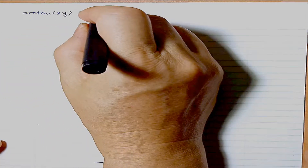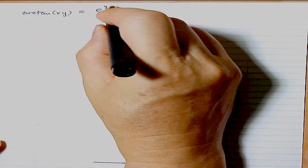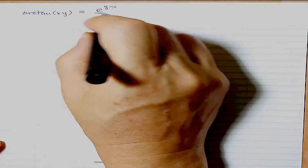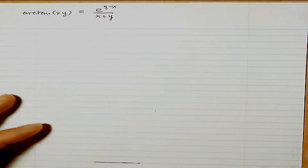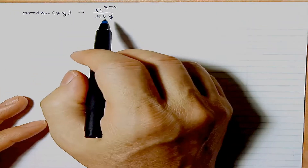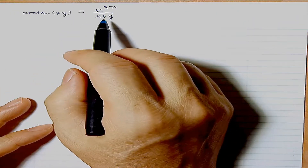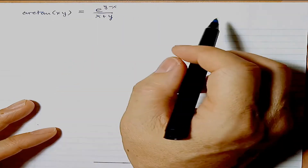Try set number four, first question: find the derivative of arctan. So find the derivative of arctan(xy) = e^(y-x) / (x+y). We want to find the derivative of all that. Since this is implicit differentiation, it's best to avoid the quotient rule because that would be one big lump.